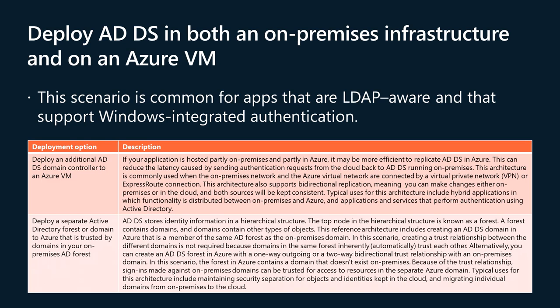You can also deploy a separate Active Directory forest or domain to Azure that is trusted by domains in your on-premises AD forest. ADDS stores identity information in a hierarchical structure where the top node is a forest, which contains domains. This reference architecture includes creating an ADDS domain in Azure as a member of the same AD forest as the on-premises domain, meaning trust is not required since domains in the same forest automatically trust each other. Alternatively, you can create an ADDS forest in Azure with a one-way or two-way trust relationship with an on-premises domain, with typical uses including maintaining security separation for objects and migrating individual domains from on-premises to the cloud.